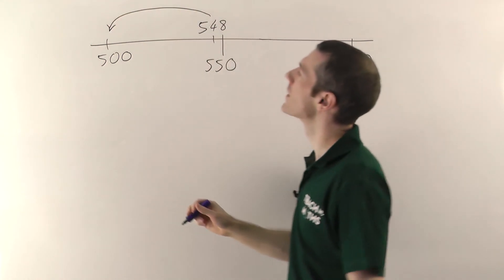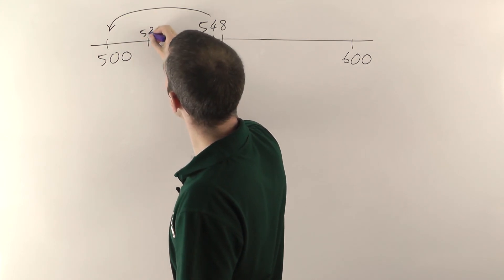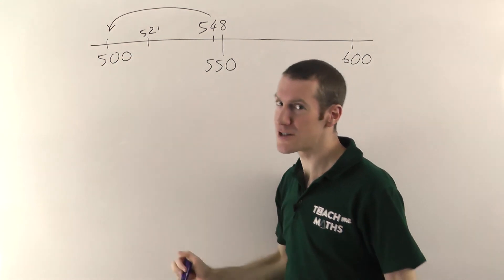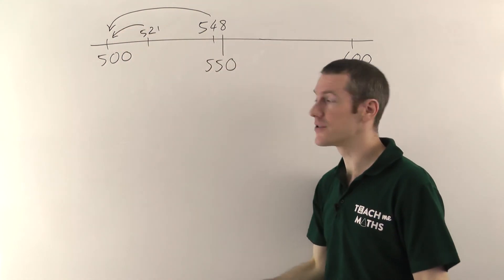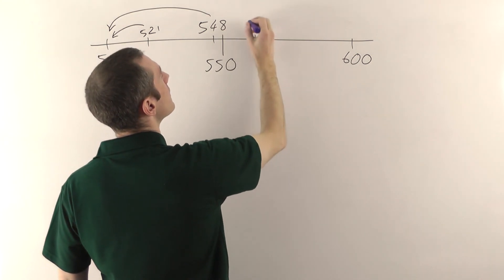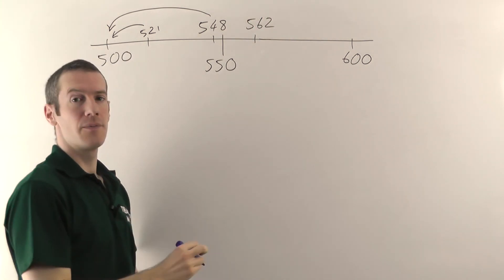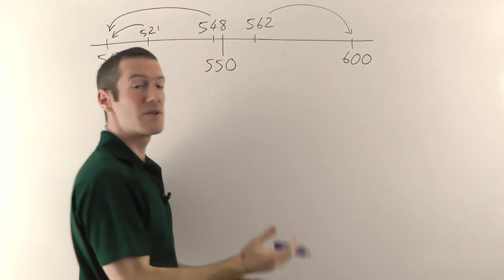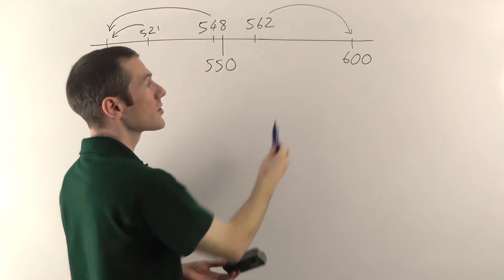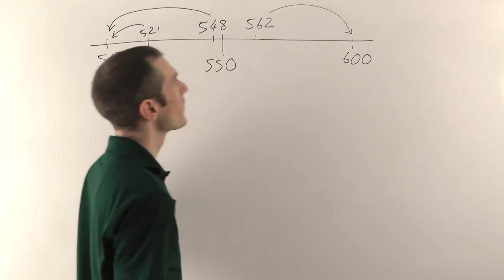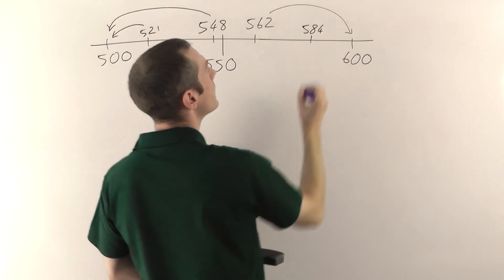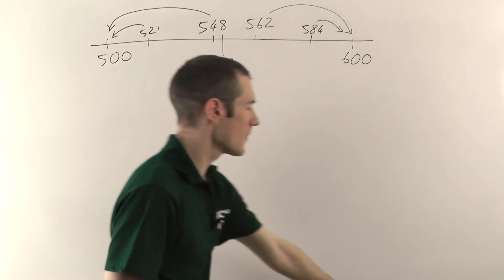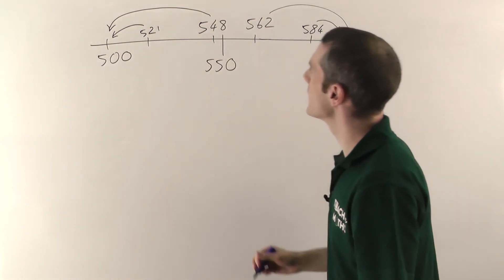If we had another number like 521, it's also less than 550, less than the halfway point, therefore it must be closer to 500 — so that rounds to 500. If we had 562, that's bigger than the halfway point, bigger than 550, so that would round up to 600. And 584 — again, bigger than the halfway point, so it's going to round up to 600.